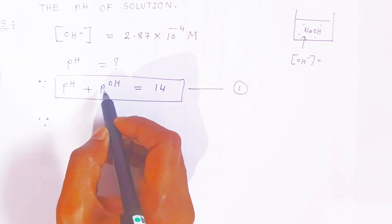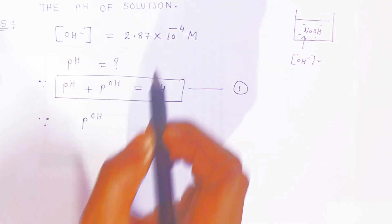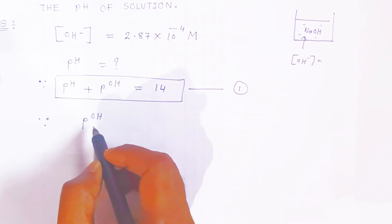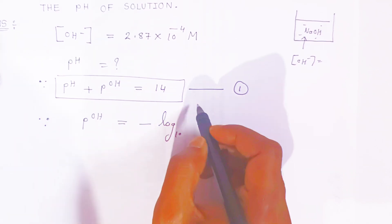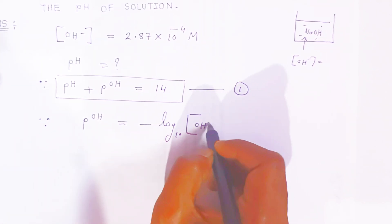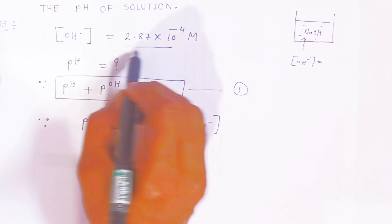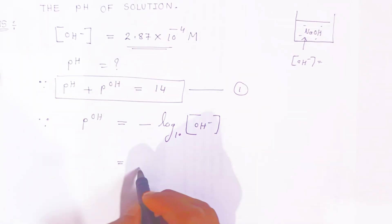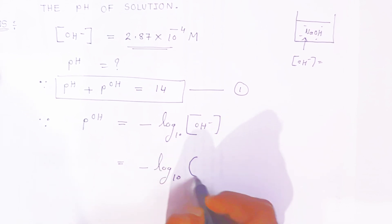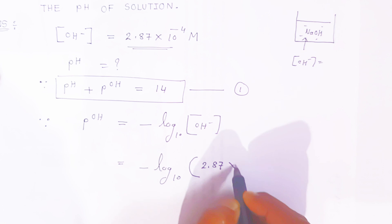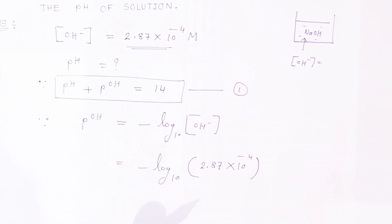Since you know the formula of pOH — how you will calculate the pOH if the concentration of hydroxyl is given — the relation is: pOH is equal to negative log of base 10 of concentration of hydroxyl ion. The concentration is given to you, so just put the value: negative log base 10 of 2.87 × 10 raise to minus 4.